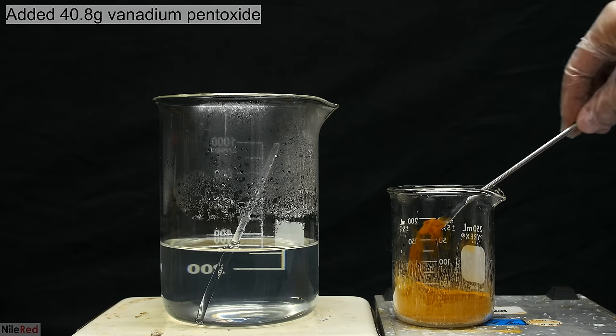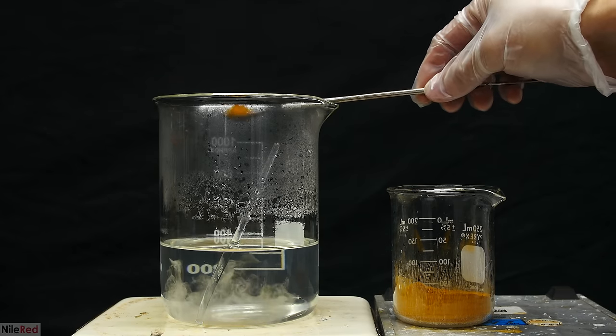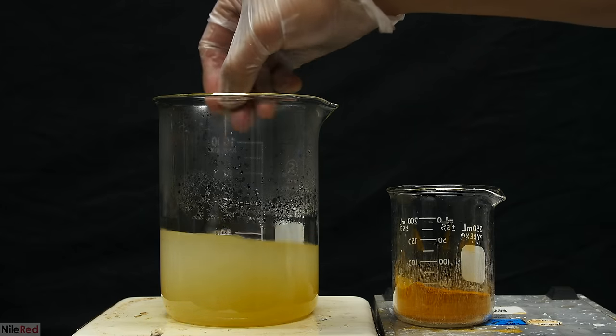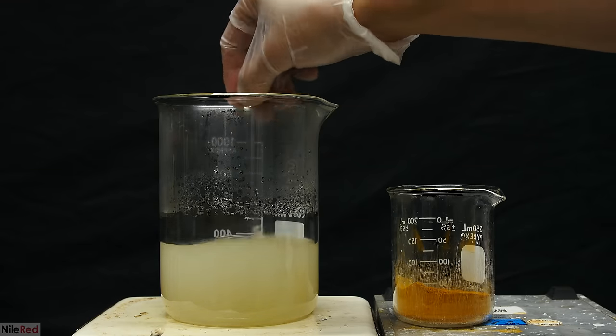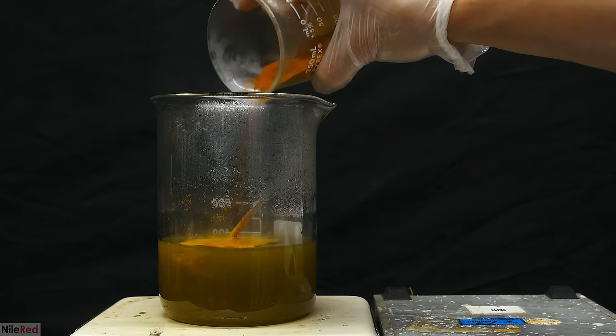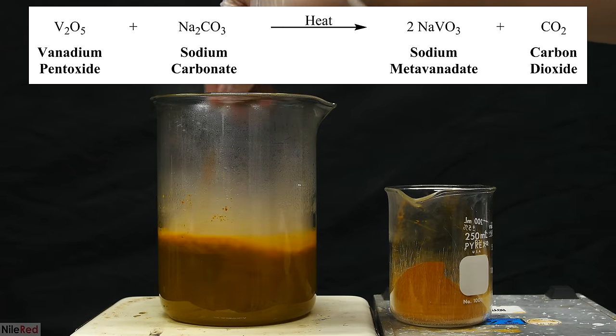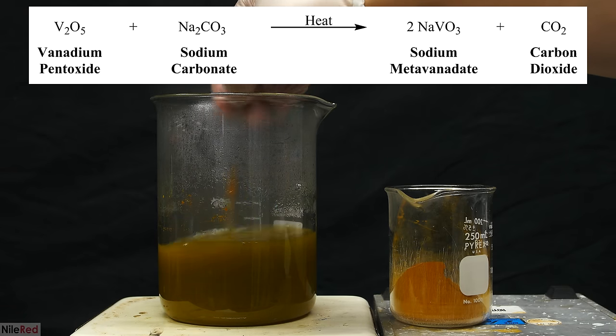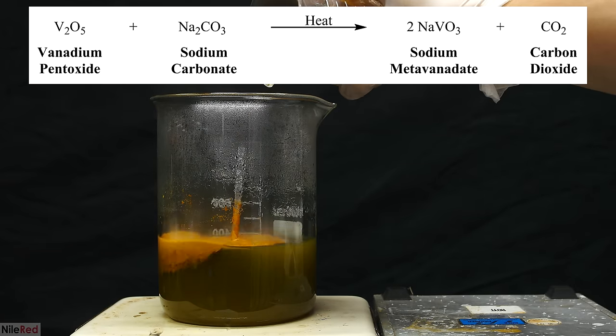Once everything had dissolved and we had our hot solution of sodium carbonate, it's time to slowly add the vanadium pentoxide. I really need to emphasize that it's important that it's added slowly because this reaction produces a lot of CO2 gas, and if we added it all at once or too quickly, it could easily bubble out of the beaker. The overall reaction occurring here is between vanadium pentoxide and sodium carbonate to produce sodium metavanadate and CO2 gas. This reaction only takes place at a decent rate in hot solutions.